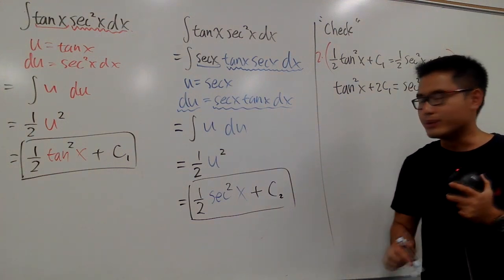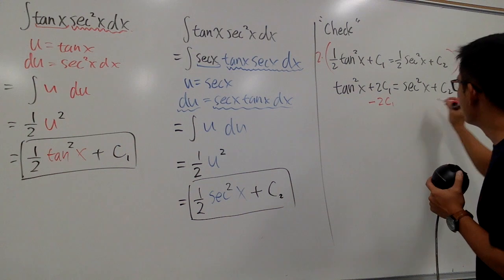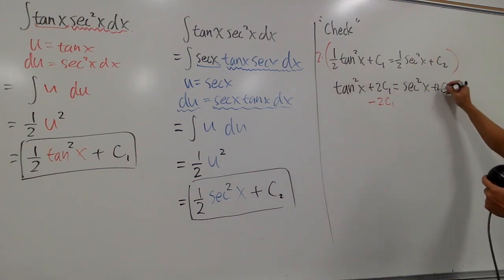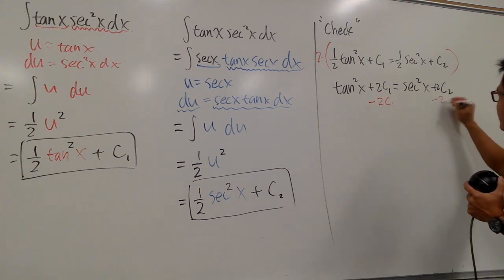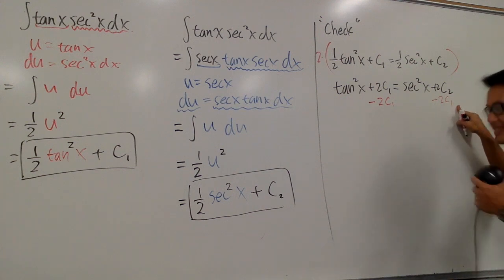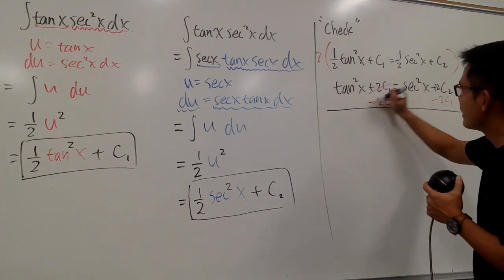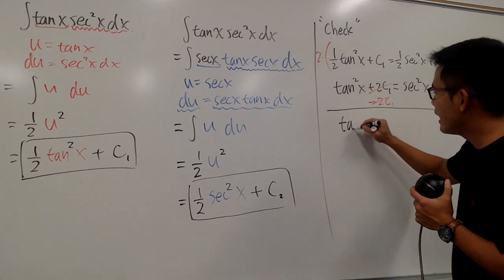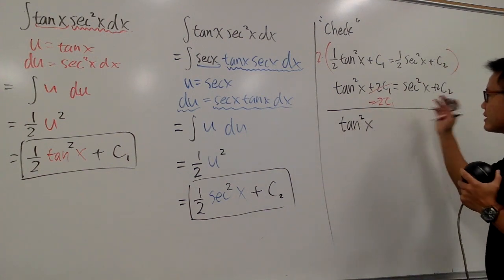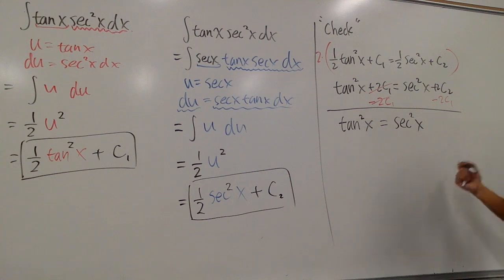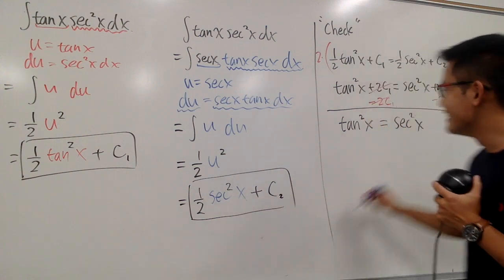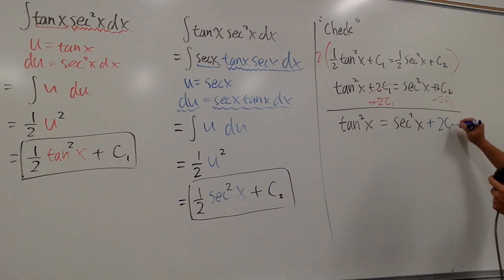And now, this is what I would like to do. Let me subtract 2c2 on both sides. Let me minus 2c2 on both sides, so I'll put down minus 2c1 right here. Okay, so this right here is out. On the left-hand side, I have tangent squared x. On the right-hand side, we have secant squared x. And this right here is just a constant, it's just a number. This right here, let me write it down all in blue. Plus 2c2 minus 2c1.